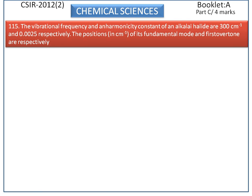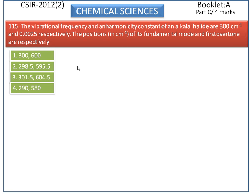The vibrational frequency and anharmonicity constant of an alkali halide are 300 per centimeter and 0.0025 respectively. The positions of its fundamental mode and first overtones are respectively. The options are shown here.